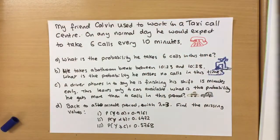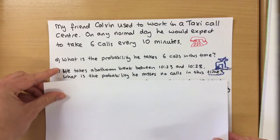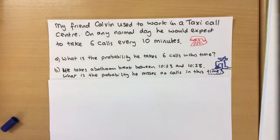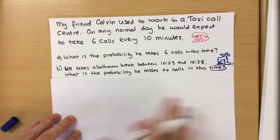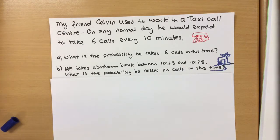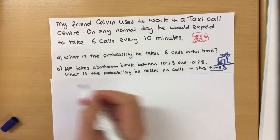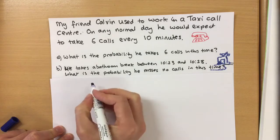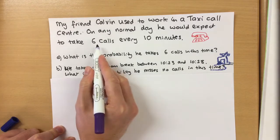Right, in our second question, Calvin takes a bathroom break between 10:23 and 10:28. What's the chance he misses no calls while he's away at the bathroom? Well first thing to notice, the length of time here is no longer 10 minutes, we're down to five minutes.